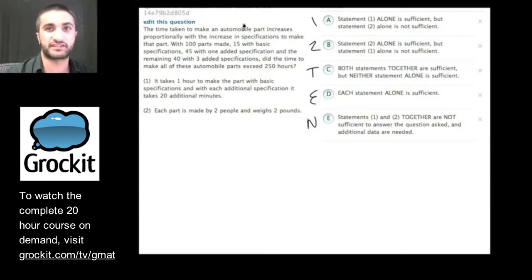So this is a specific type of GMAT data sufficiency question called the yes-no question. And if you notice, they're not asking us for a number. They're just asking us, did the time to make all the parts exceed 250, yes or no? We don't need to know what the number is, whether it's 251 or 249. We just need to know whether it exceeds 250 or it doesn't exceed 250. So let's read the question, and like we said, what are we going to do first? We're going to parse the language. We're going to break it down.